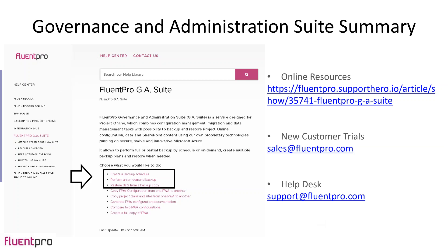If you want to go online, there are resources available. Our help guides are very in-depth and step-by-step. The GA Suite help guide prominently covers backup — create a backup schedule, perform an on-demand backup, restore data from a backup copy — which is essentially what I just showed. If you are a customer, a partner, or have a customer, please feel free to give us an email for a trial. We do issue quotes as part of trials, which are noncommittal, so you have an idea of cost. Throughout the trial process, if you need help, you can write to support@fluentpro.com.